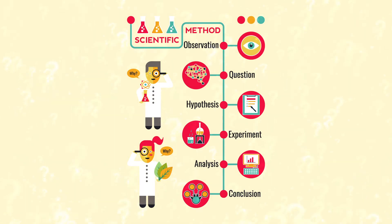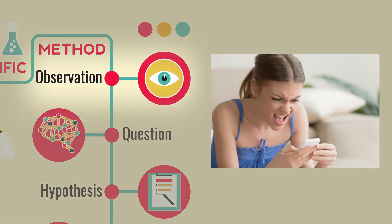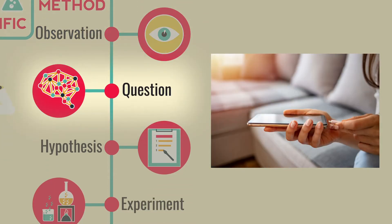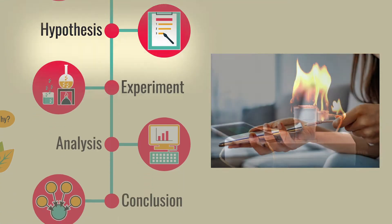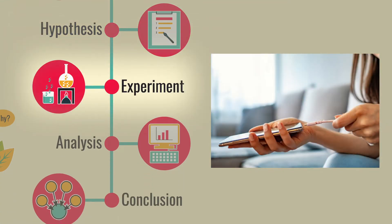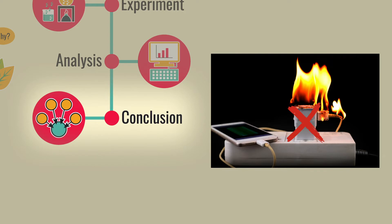Any unproven hypotheses require further testing, and even if a conclusion is reached, new questions may arise. Let's go back to the original dilemma. The observation was: my phone won't charge. This creates a question — why isn't my phone charging? Now a hypothesis: the outlet may be broken. Then comes an experiment: I'll try another outlet that I know is working. You analyze data: my phone is still not charging. Conclusion: it must not be the outlet that is causing my phone to not charge.